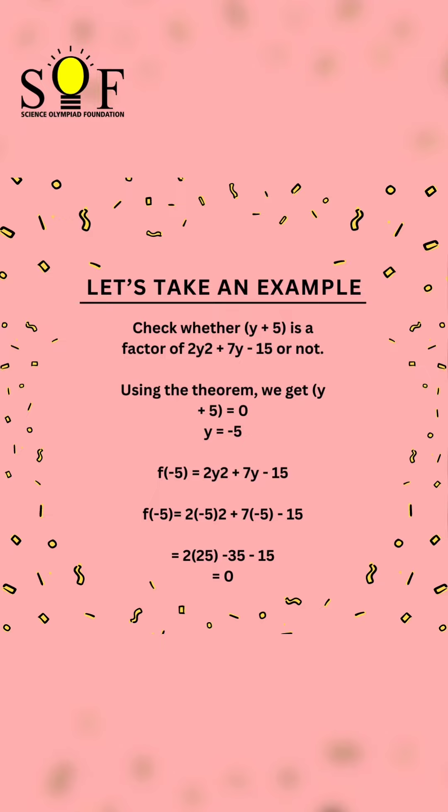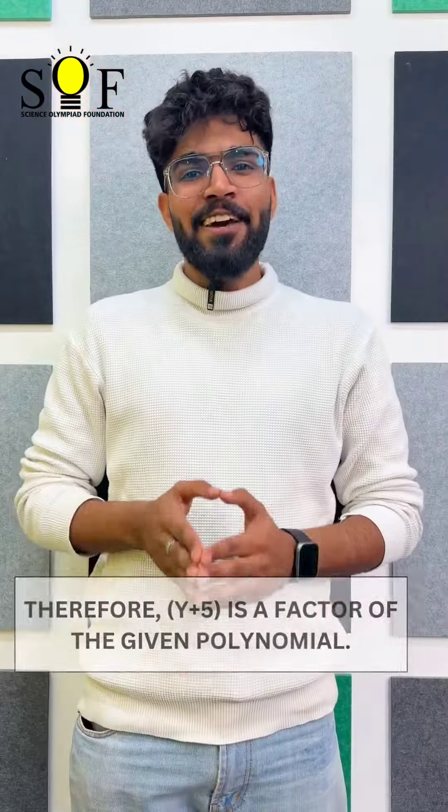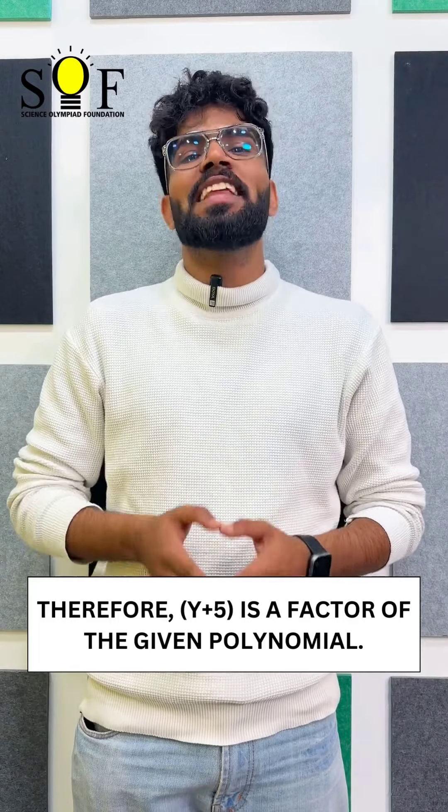f(-5) = 2(-5)² + 7(-5) - 15 = 2(25) - 35 - 15 = 0. Therefore, (y + 5) is a factor of the given polynomial.